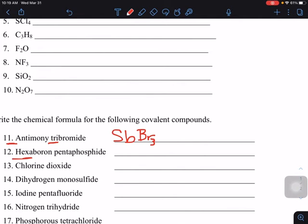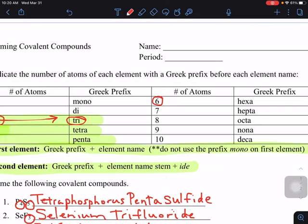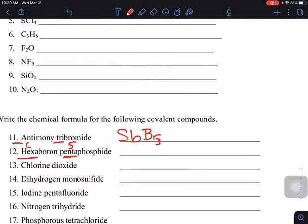The next one here, we've got hexa as a prefix and penta. We've already seen that penta is five, and six is hexa. So boron has a symbol of B, and we have six of them, so we use a six subscript. And phosphide is phosphorus, so we put the P for phosphorus, and there are five of them, so we use a five subscript. B6P5.